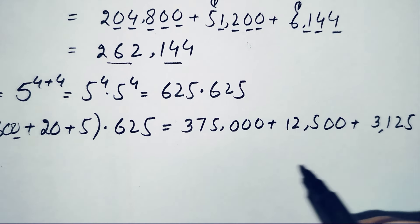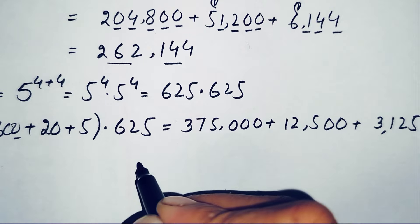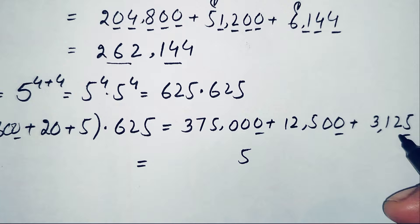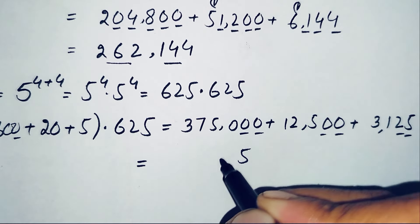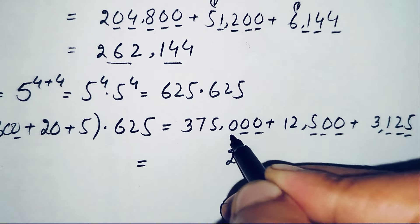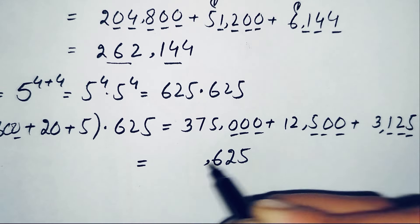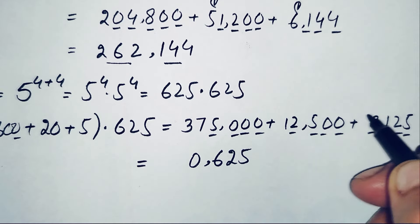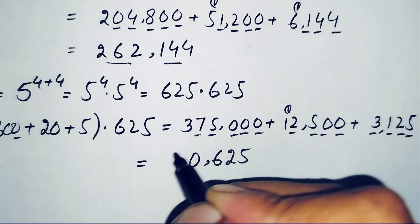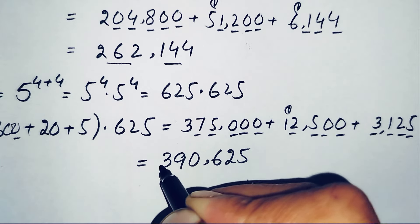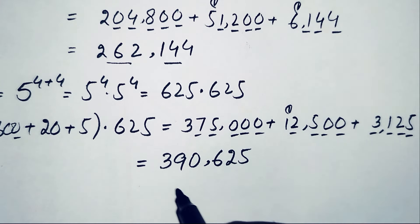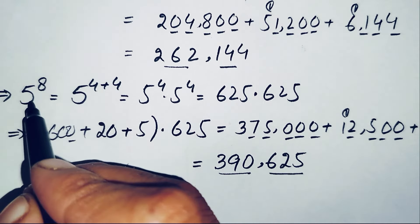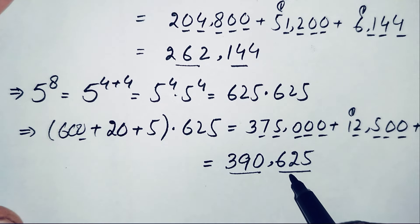Now we add the three partial products. Starting from the ones position: 5+0+0=5, 2+0+0=2, 1+5=6, 6+0=6, 3+2=5, 5+5=10 (write 0, carry 1), 1+1=2, 2+7=9, and 3. The addition gives 390,625. So the value of 5 raised to power 8 is 390,625.